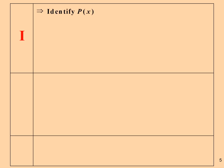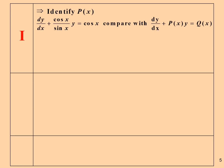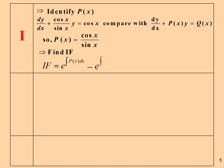Identify the function P(x) by comparing with the standard form. We find that P(x) = cos(x)/sin(x). Finding the integrating factor, we get sin(x).